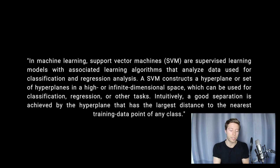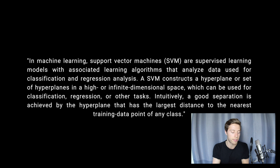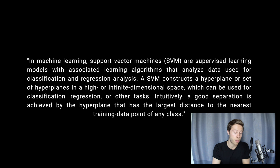Let's start with the formal description. In machine learning, support vector machines (SVMs) are supervised learning models with associated learning algorithms that analyze data used for classification and regression analysis. An SVM constructs a hyperplane or a set of hyperplanes in a higher or infinite-dimensional space, which can be used for classification, regression, or other tasks. Intuitively, a good separation is achieved by the hyperplane that has the largest distance to the nearest training data point of any class.